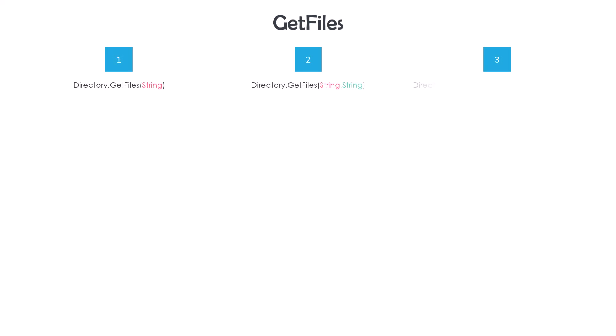Let's start with the first one: get files from a directory. As the name suggests, this function is to get the files from a specific folder. There are four different overloads for this function; I will discuss three of them. The first overload is to get all files from the directory, with only one input parameter of type string — the folder path from which we want to get the files.